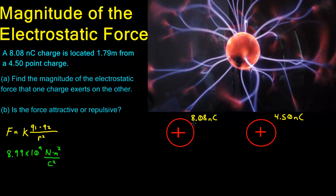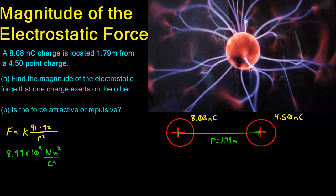Q1 is simply going to be 8.08 nanocoulombs. Q2 is going to be 4.50 nanocoulombs. R squared is going to be the distance between them. When talking about distances, it is not just from the outer edge — it is actually from the center of one charge all the way to the center of the other, which is 1.79 meters.